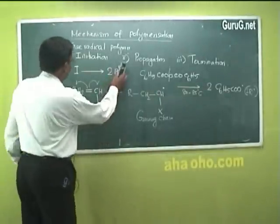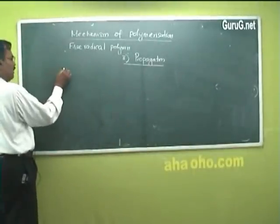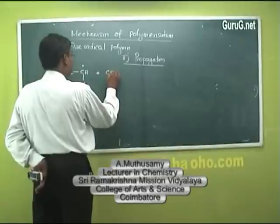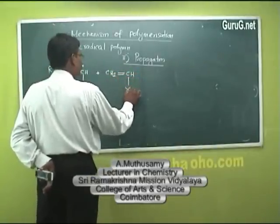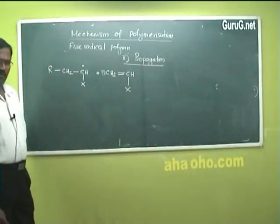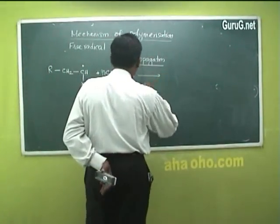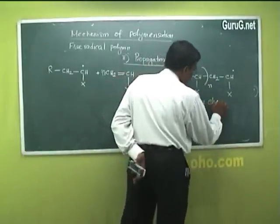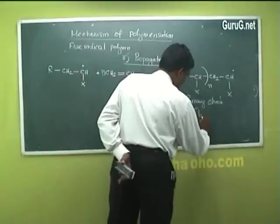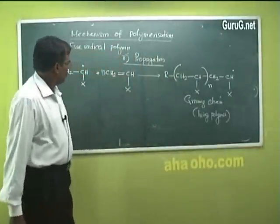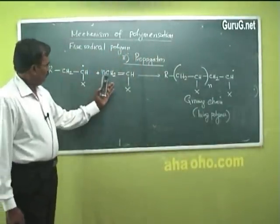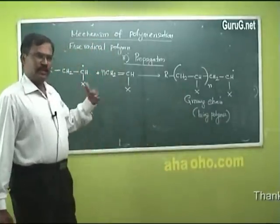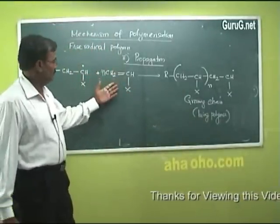Now let us move to propagation. In the propagation step, this reactive free radical combines with a large number of monomer molecules — let's say n monomer units — giving a growing chain, also called a living polymer.